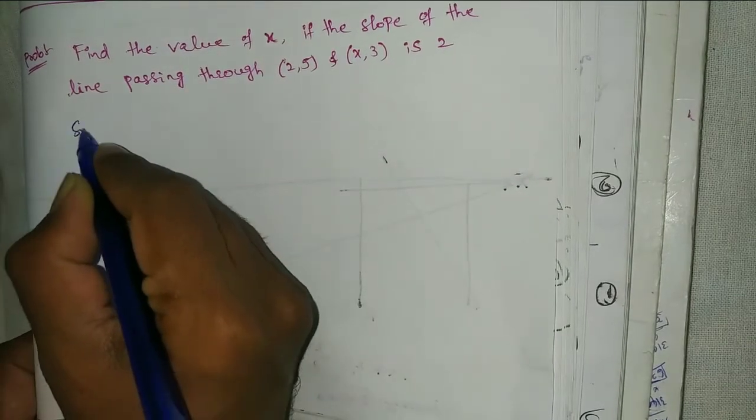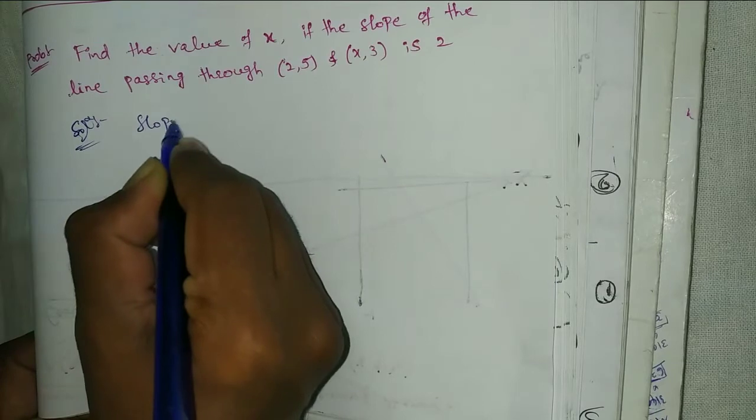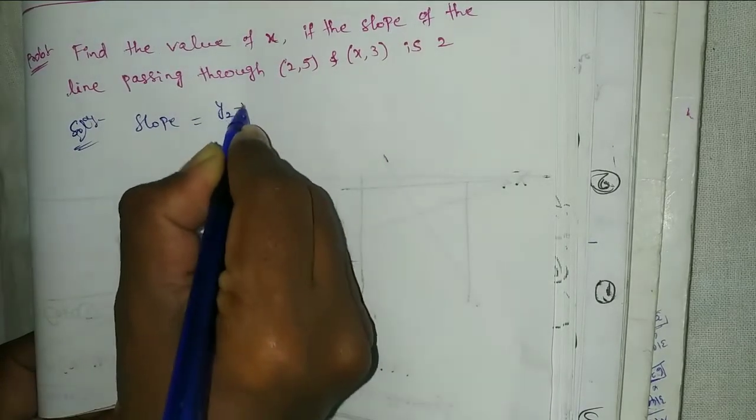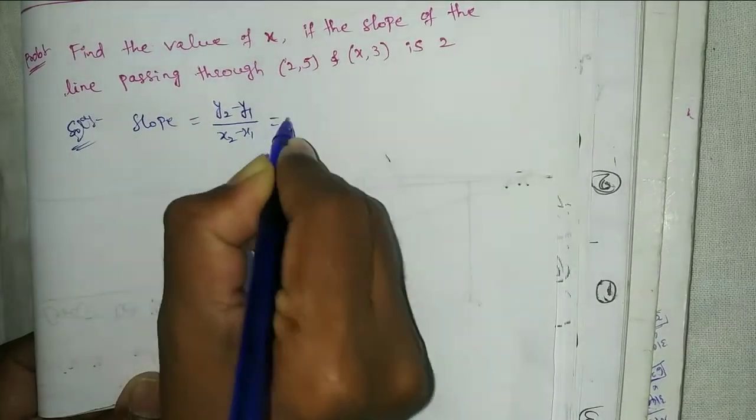Alright, solution. Slope equal to y2 minus y1 by x2 minus x1 equal to 2.